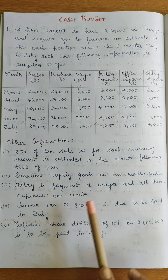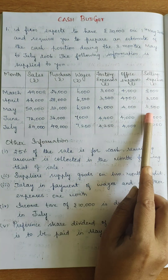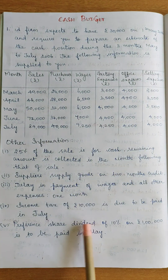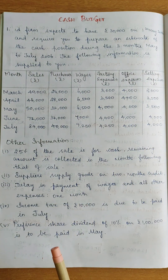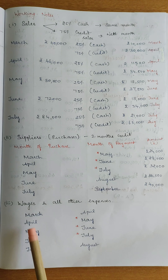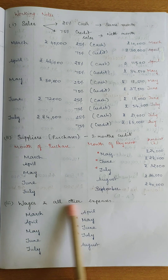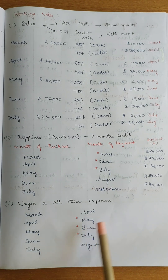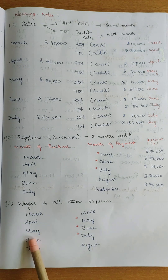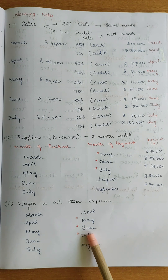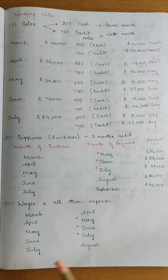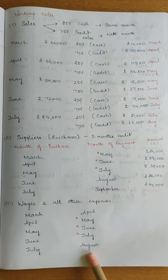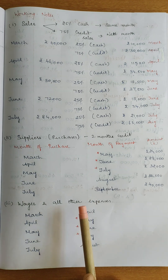Wages and other expenses have a 1-month payment delay. March wages and other expenses are paid in April, April expenses are paid in May, May expenses are paid in June, and June expenses are paid in July. Now we have all the workings; let's post them to the format.